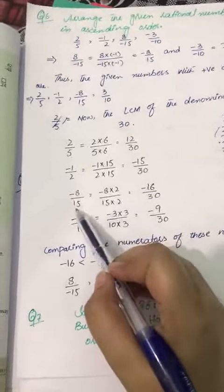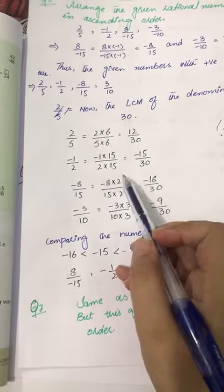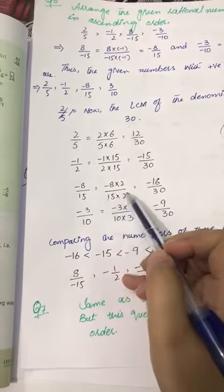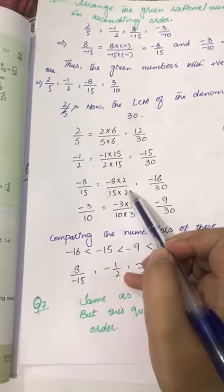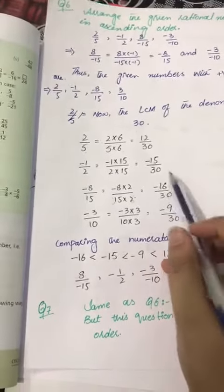Same for minus 8 by 15: minus 8 multiply by 2, 15 multiply by 2. We need numbers to multiply by this way so that we have the same denominator here.